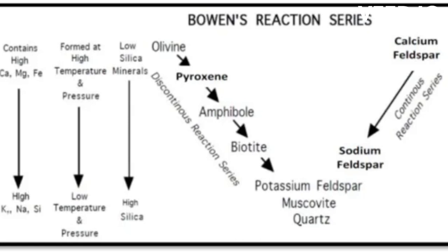The continuous branch describes the evolution of the plagioclase feldspars as they evolved from being calcium-rich to more sodium-rich.